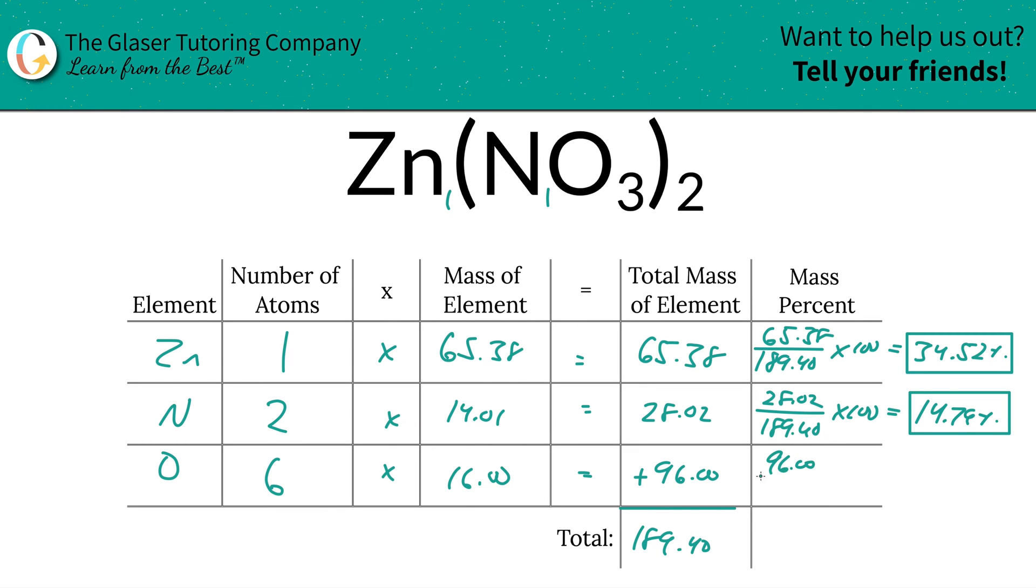Oxygen, same thing. It's going to be 96 divided by the total mass of that compound, 189.40. You see how fast this can go with a ton of practice, right? That's it.